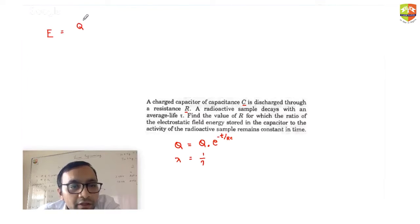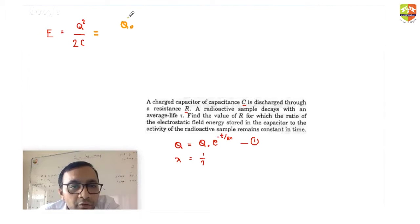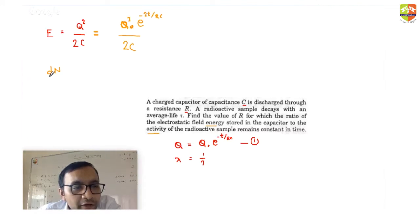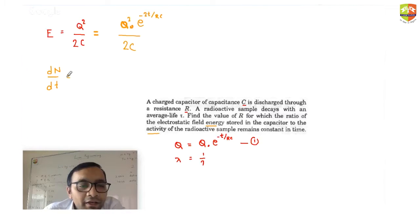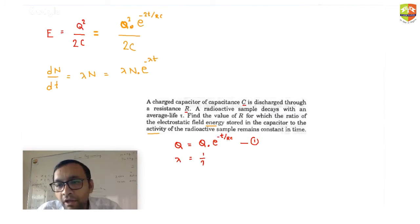The energy stored in the capacitor is E = q²/2C. Substituting q = q₀ e^(−t/RC), we get E = (q₀²/2C) e^(−2t/RC). The activity of the radioactive sample is |dN/dt| = λN, and N as a function of time is N = N₀ e^(−λt). So activity = λN₀ e^(−λt).